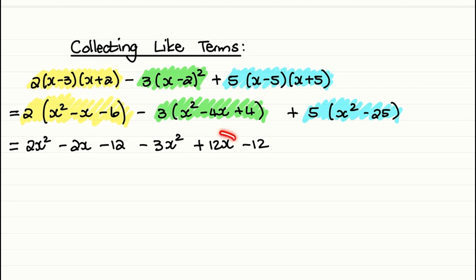The reason why we have +12x is because we are multiplying -3 with -4x. And then in the blue, we will have 5x² - 125.